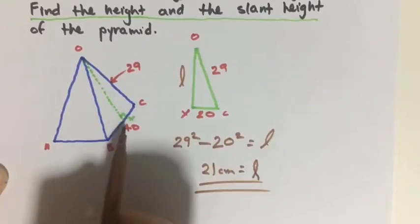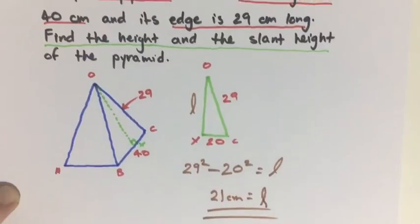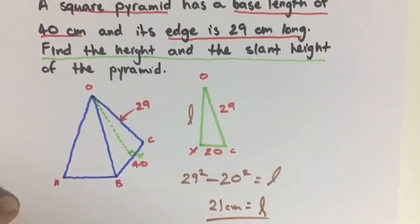Okay. So now we have our slant height, it's 21. Now the next thing is we want to find the height of the pyramid.